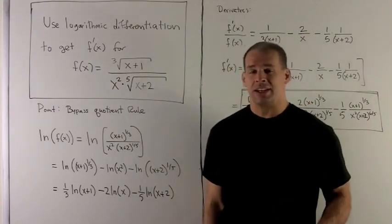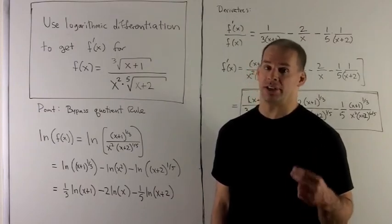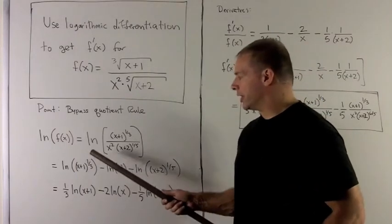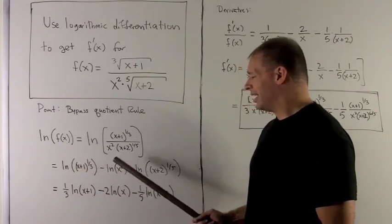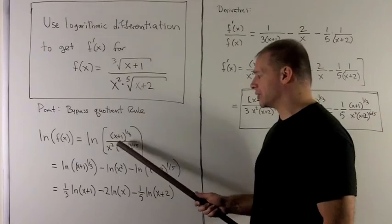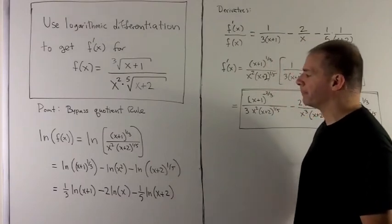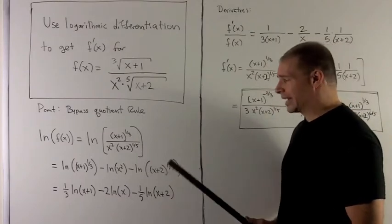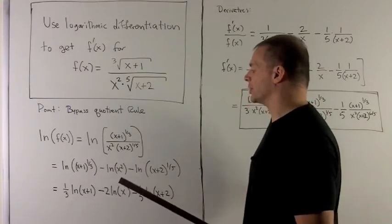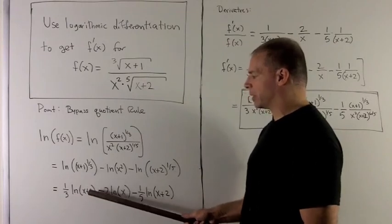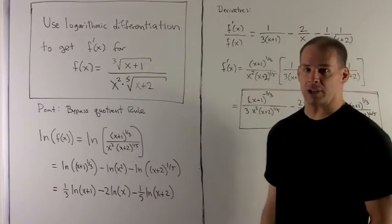So the idea is natural log turns multiplication on the inside to addition and subtraction on the outside. So this will turn into, first I'll have natural log of x plus 1 to the one-third, and the terms on the bottom are going to pick up minus signs. So this will be minus natural log of x squared and minus natural log of x plus 2 to the one-fifth. Next, we can take the exponents on these terms on the inside and bring them out to the front. So that'll turn into one-third natural log of x plus 1 minus 2 natural log of x minus one-fifth natural log of x plus 2.